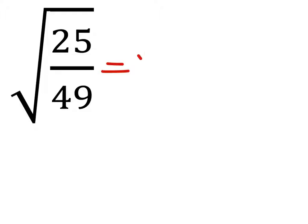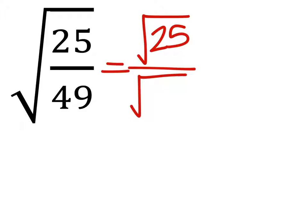There we go! I'm going to split this up. We've got the square root of 25 all over the square root of 49.